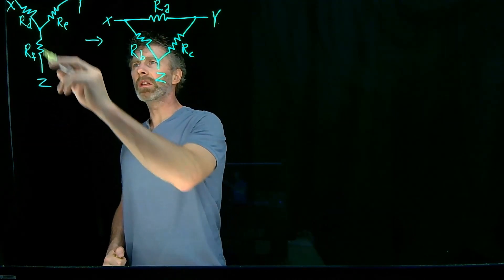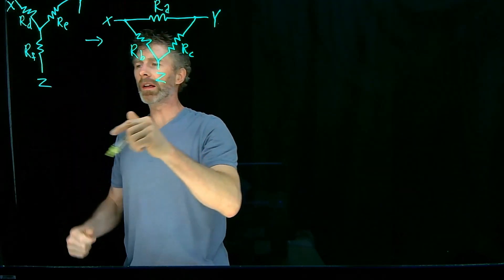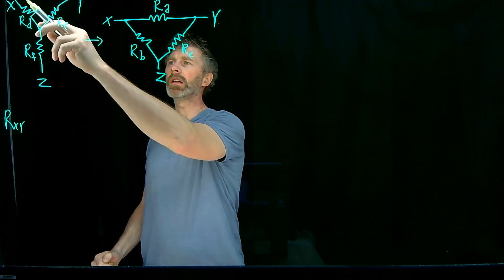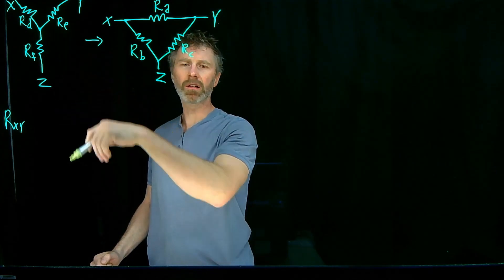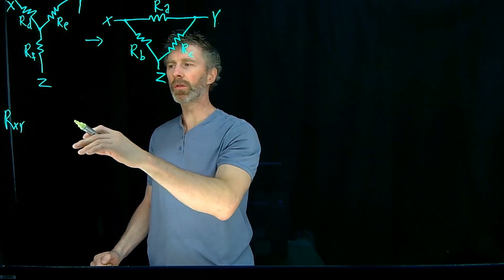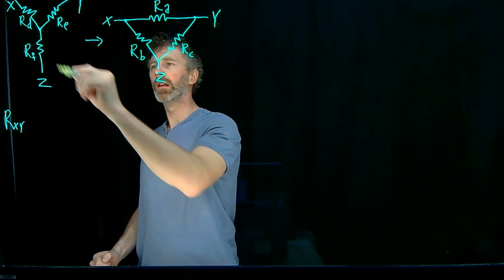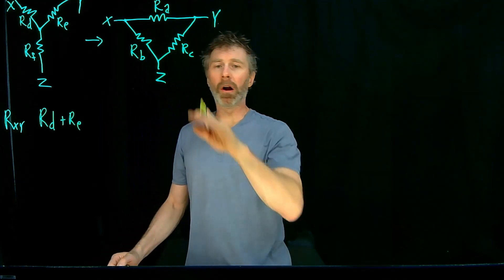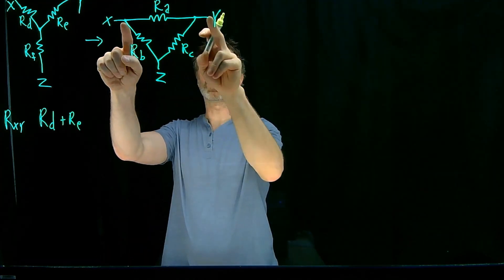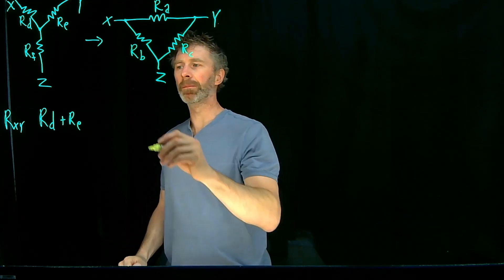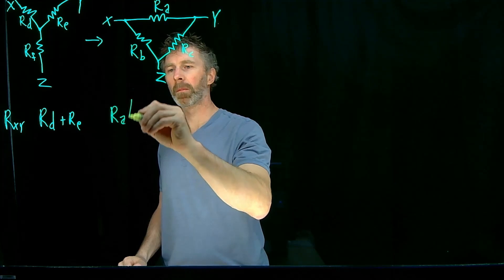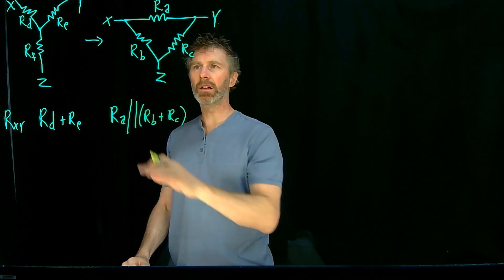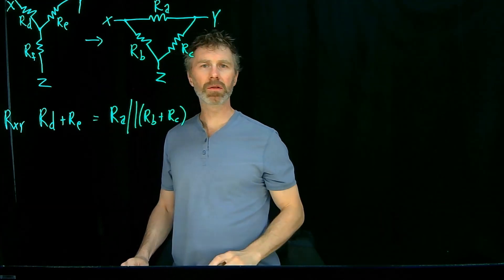So if I'm going back to the X, Y, if I have an ohmmeter and I connect it between X and Y, I will get some resistance. And that resistance is going to be based on RD and RE. It's just a series combination of those two. RF is connected off somewhere else. We are assuming that it's floating for this analysis purposes. So that R, X, Y is simply RD plus RE. But on the delta configuration, that X, Y is going to be RA in parallel with RB plus RC. And in order for these two circuits to be equivalent, those two values need to be equal.